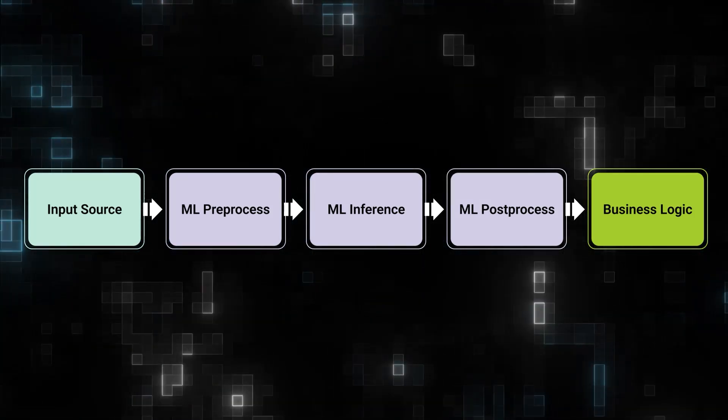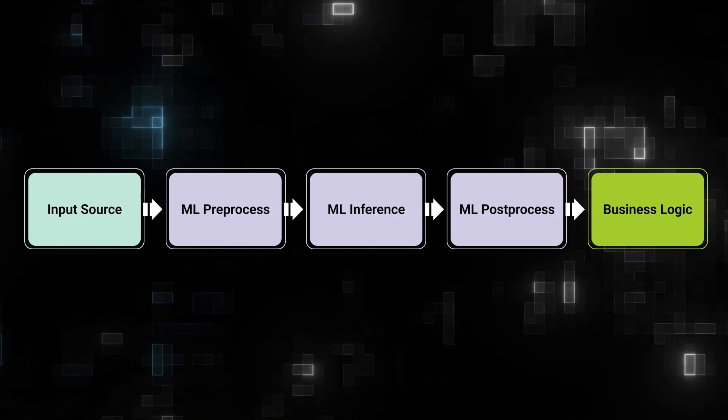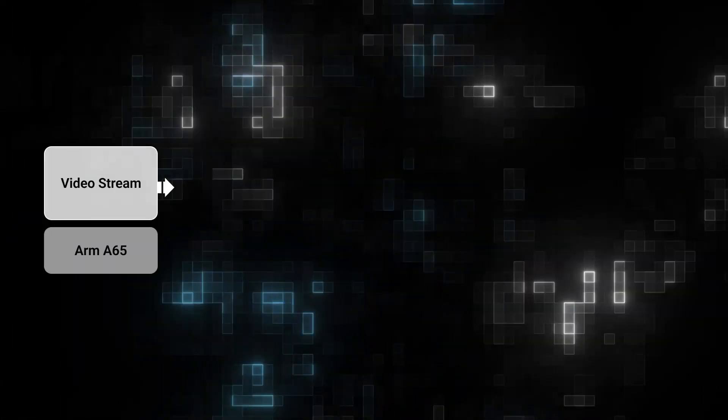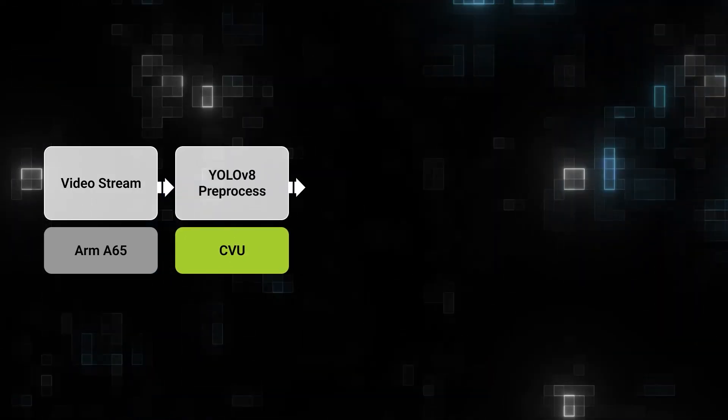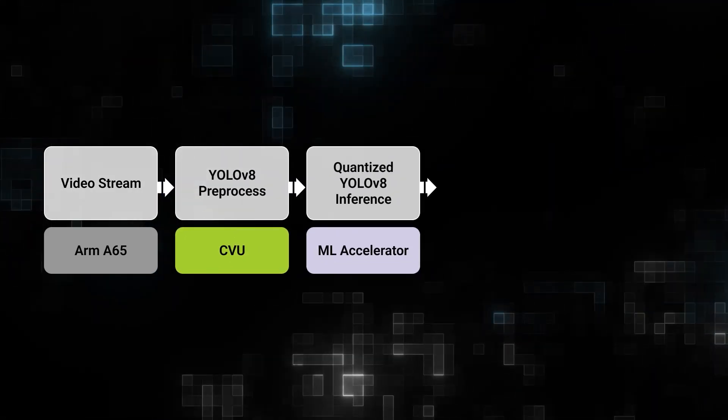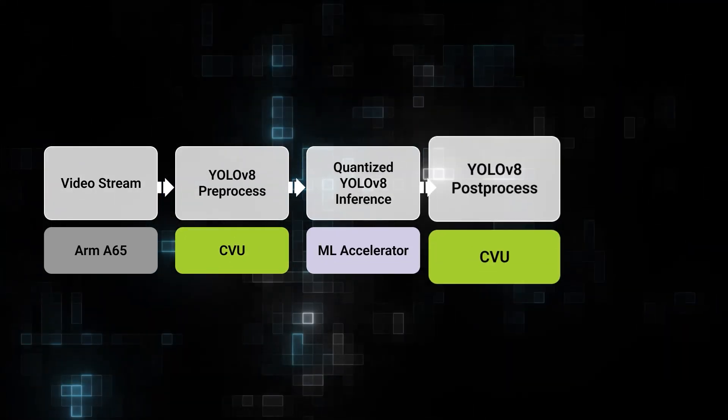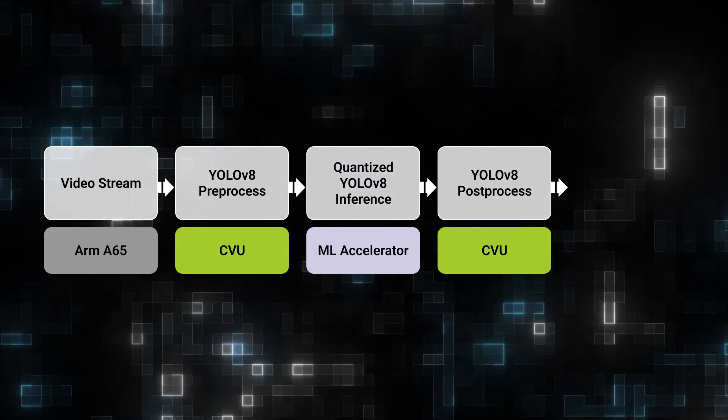For example, YOLO V8 utilizes this architecture by ingesting video streams through the video decoder, preprocessing using the EV74, performing inference on the Machine Learning Accelerator, and then encoding the output through the video encoder.